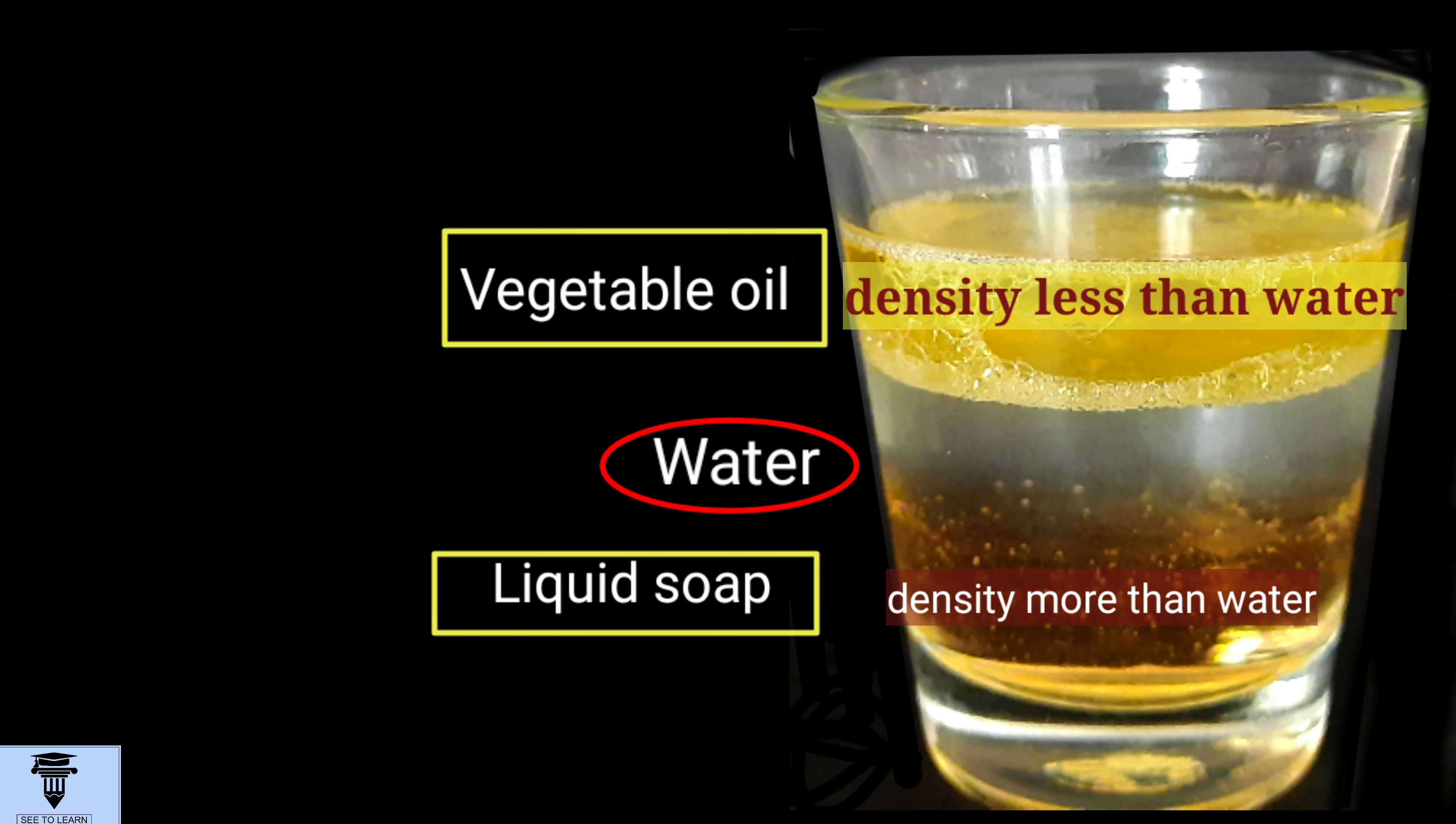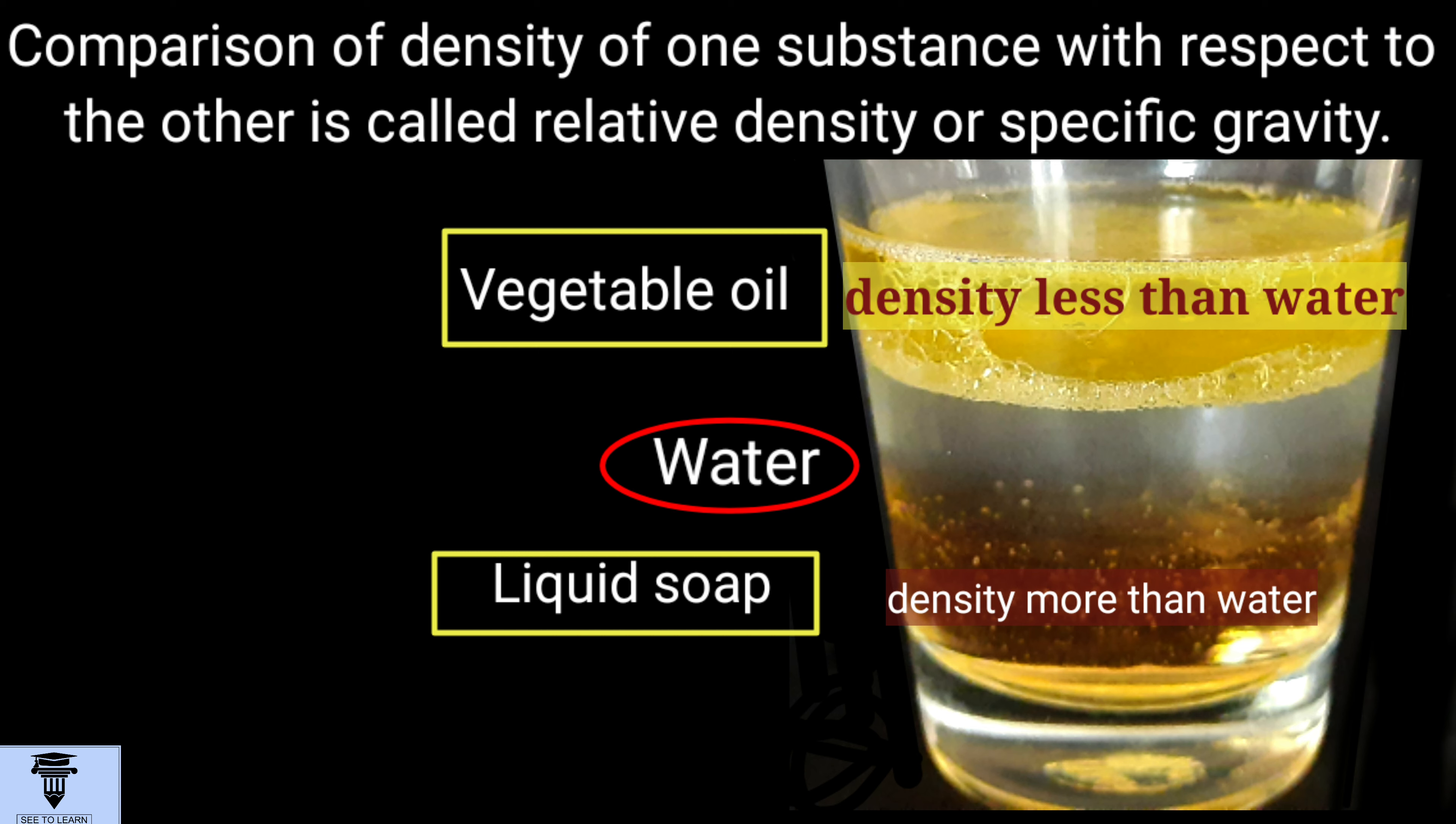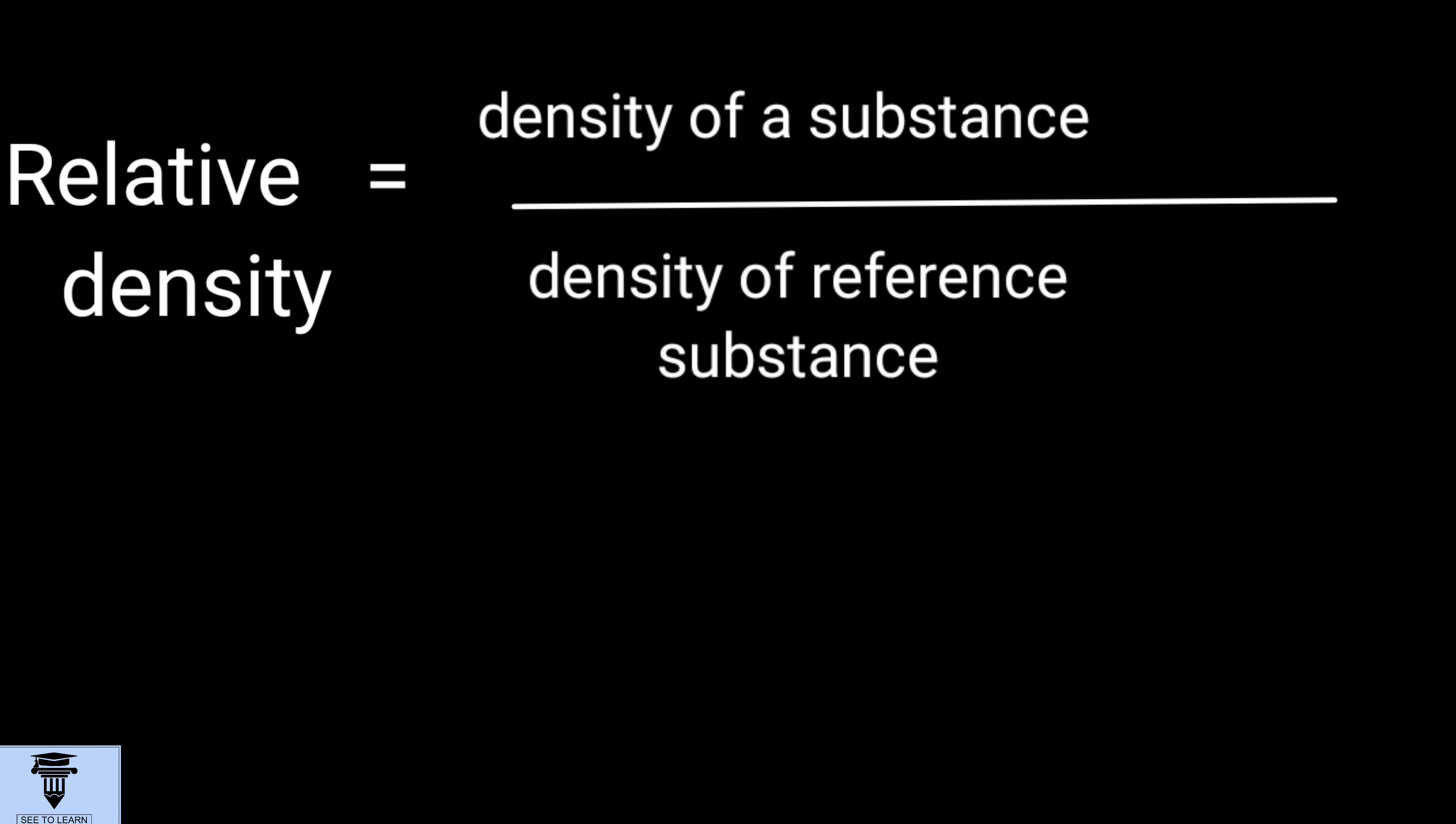Such comparison of density of one substance with respect to the other is called relative density or specific gravity. Thus, relative density is the ratio of density of a substance to the density of the reference substance.